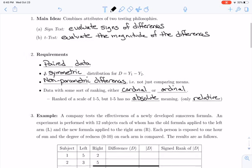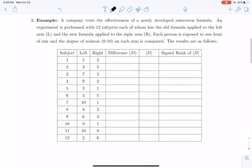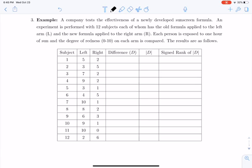So we're going to move on to an example. And this example is going to be similar to the one that we did for the sign test. Here again, a company is going to test the effectiveness of a newly developed sunscreen formula. They're going to perform an experiment with 12 subjects, not 25 like the sign test. Each of them has the old formula of sunscreen applied to the left arm and the new formula of sunscreen applied to the right arm. And then for each one, each person is exposed to one hour of sun. And the degree of redness on a scale from 0 to 10 on each arm is compared.